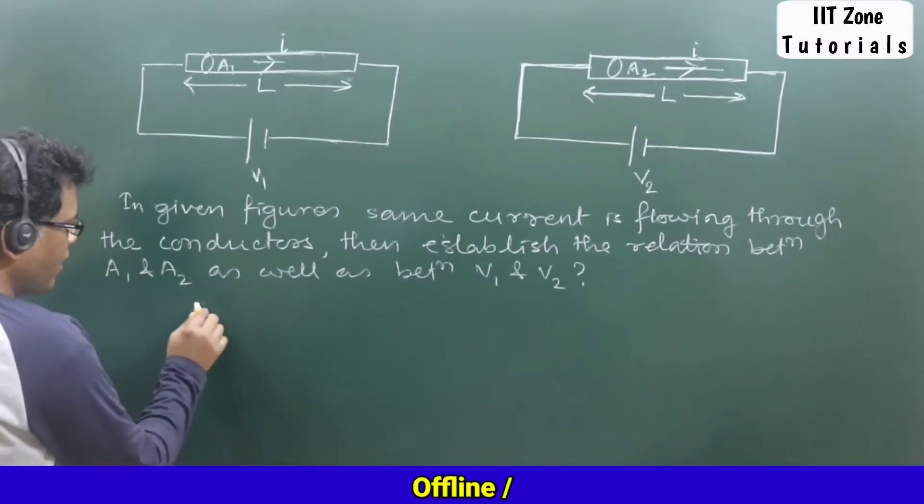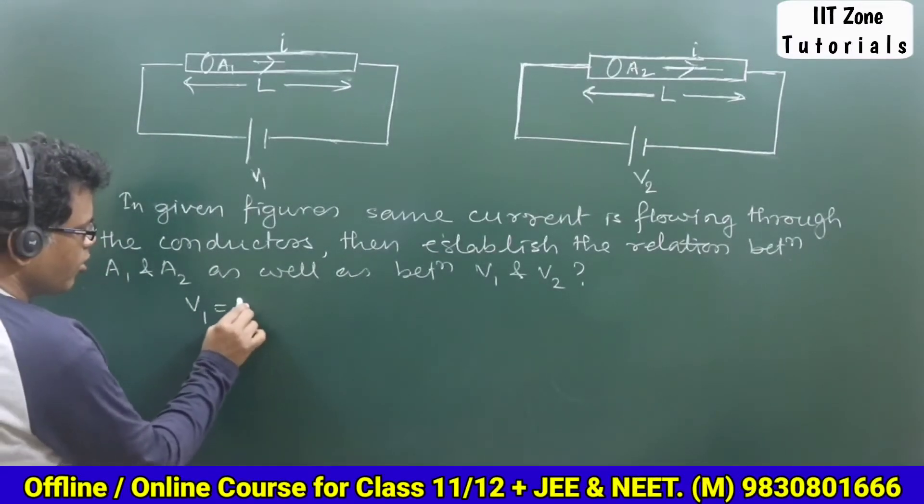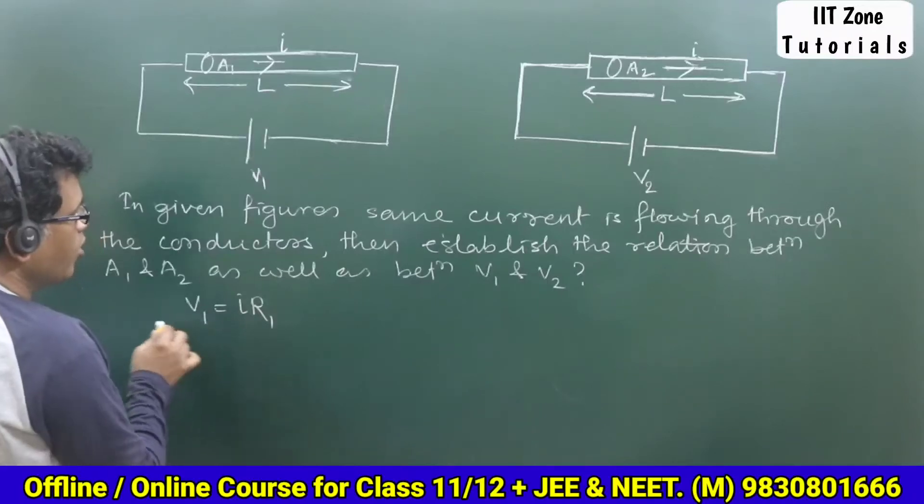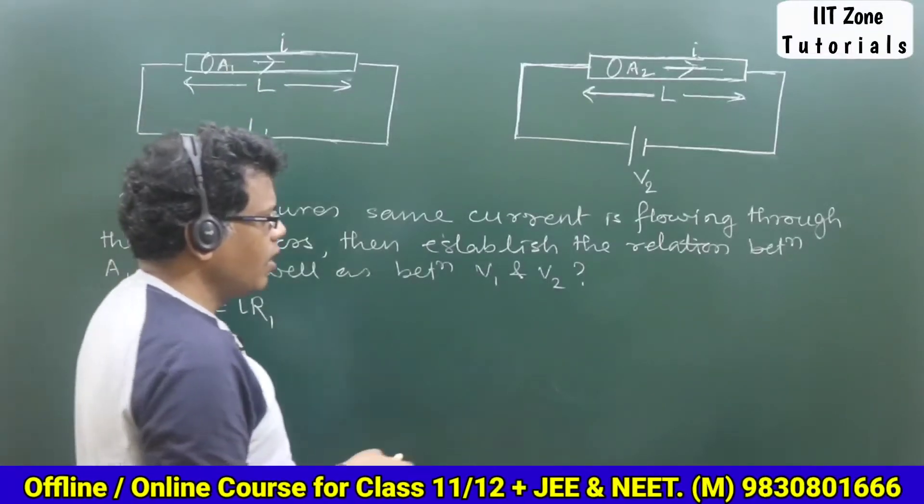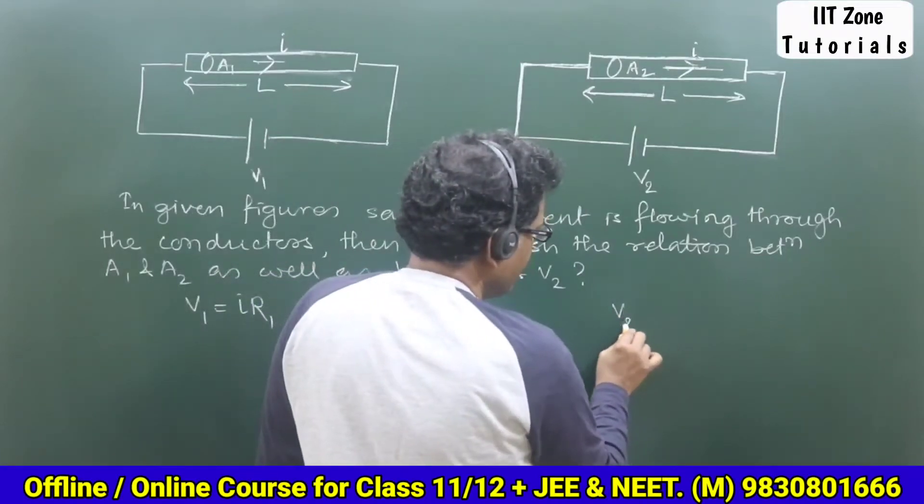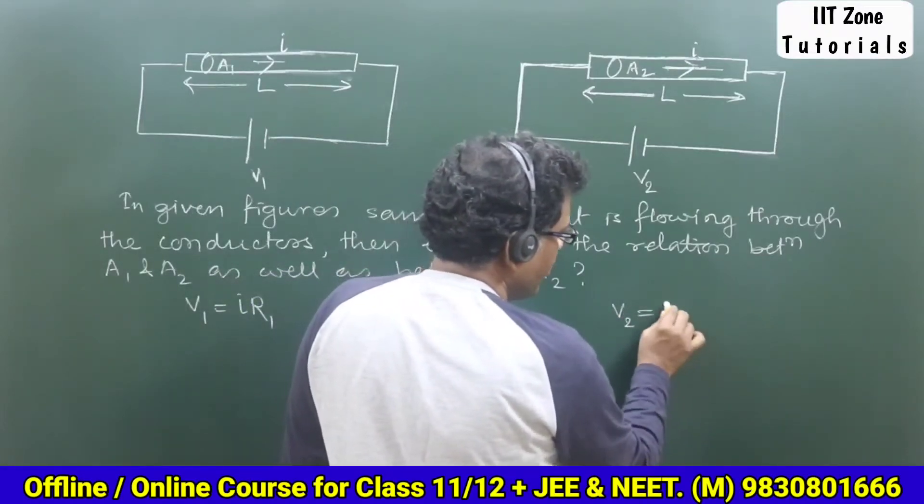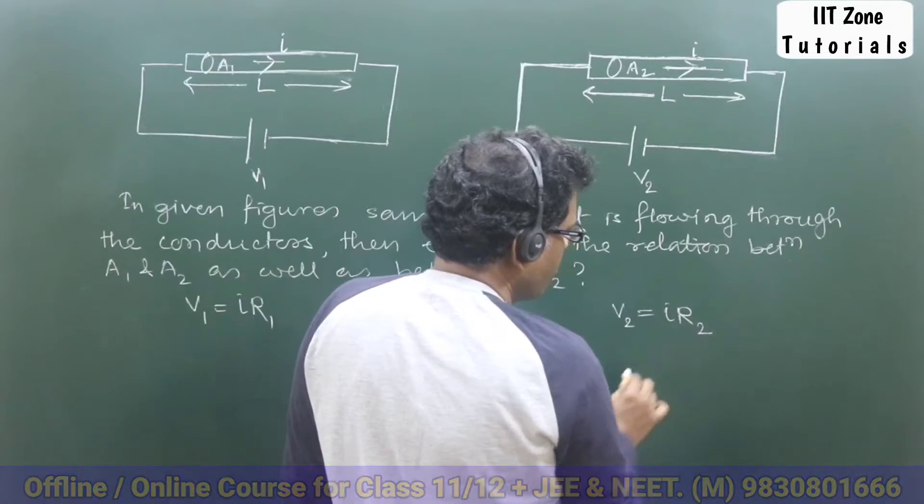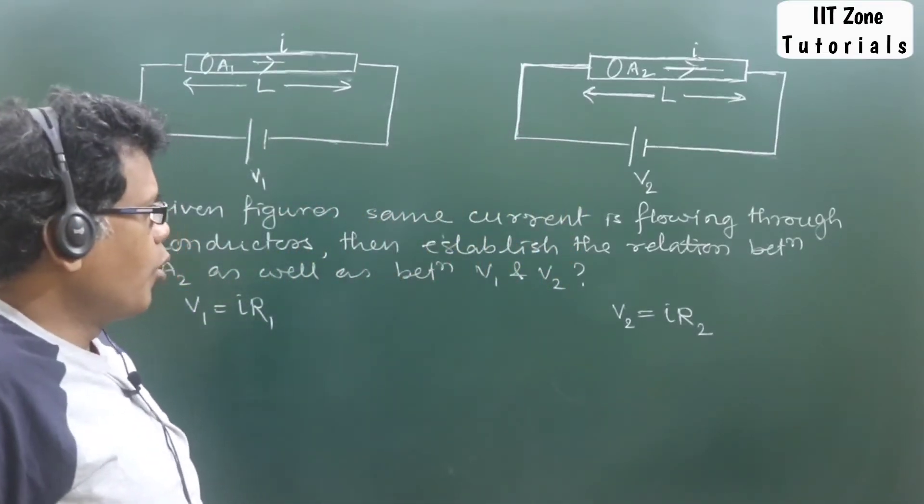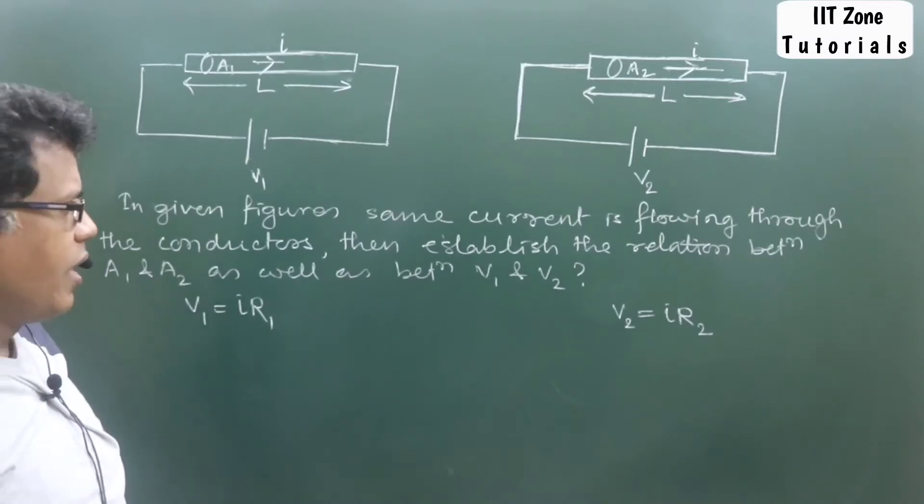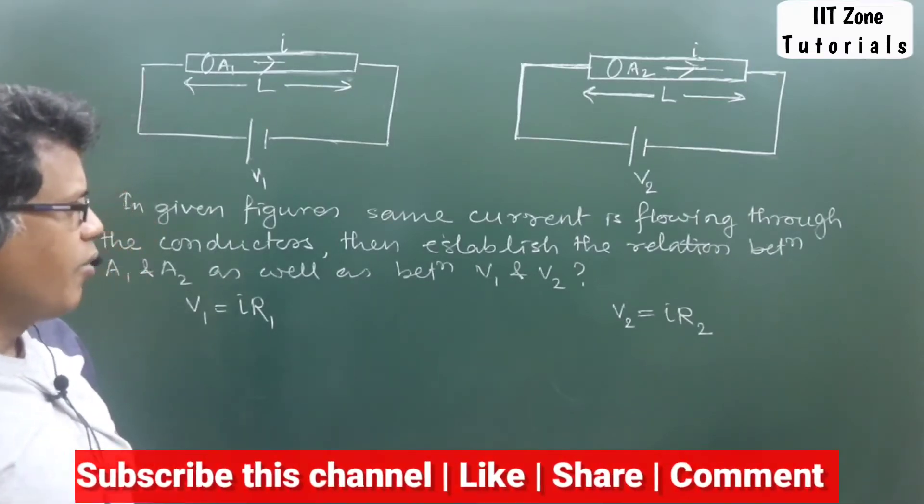Through the conductors, if same current flows, then what we can do? We can write down V1 is equal to I into R1. I do not know the resistance of this conductor—it can be taken as R1. And in this we can write down V2 is equal to I into R2. Yes or no?